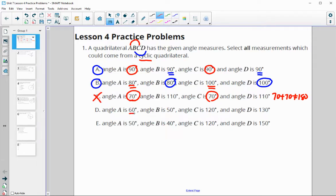In D, angle A is 60 and C is 120. That equals 180, that's good. B is 50, D is 130, that's 180, so D is good.